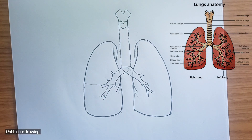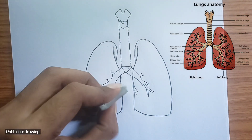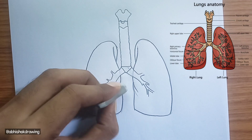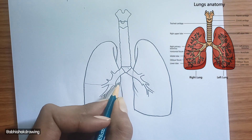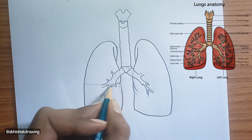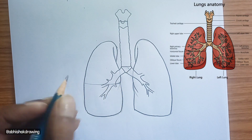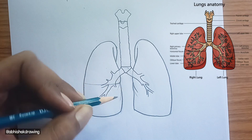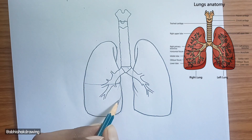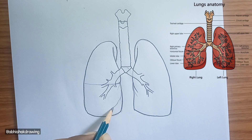Thyroid cartilage: this is the largest cartilage of the larynx, forming the Adam's apple. Cricoid cartilage: a ring-shaped cartilage forming the inferior part of the larynx, just below the thyroid cartilage.